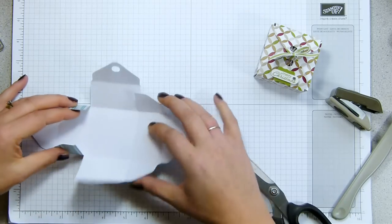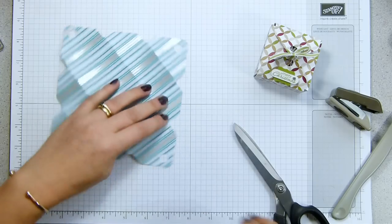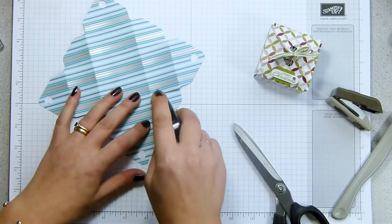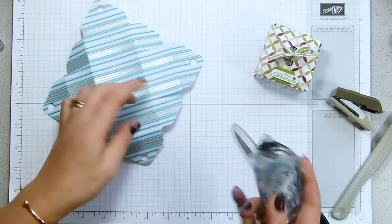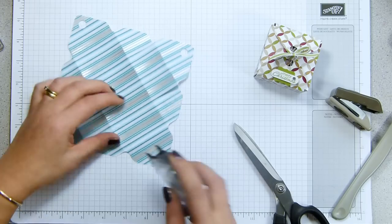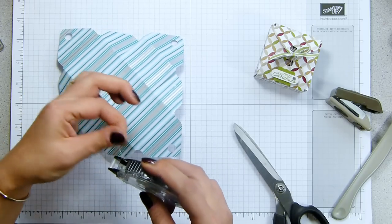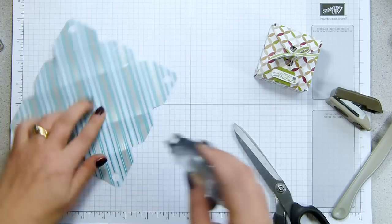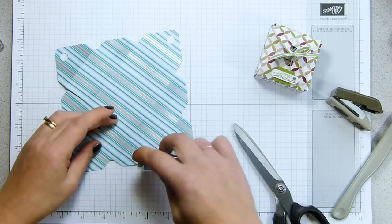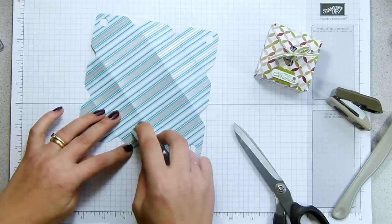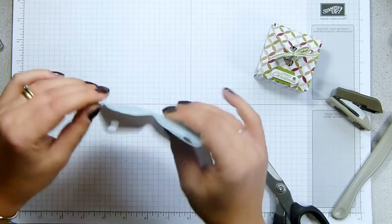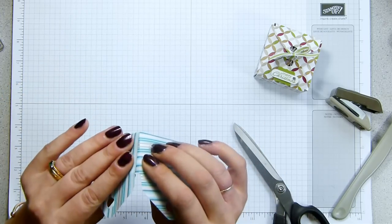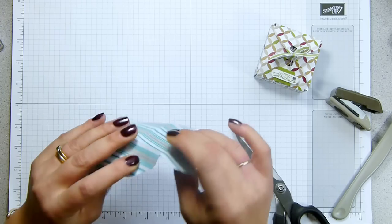And then after that you're going to stick those up. So it's easier if you turn it over and grab your snail and you're working in these little sections that are on the diagonal. And then you just fold up and line up your edges.